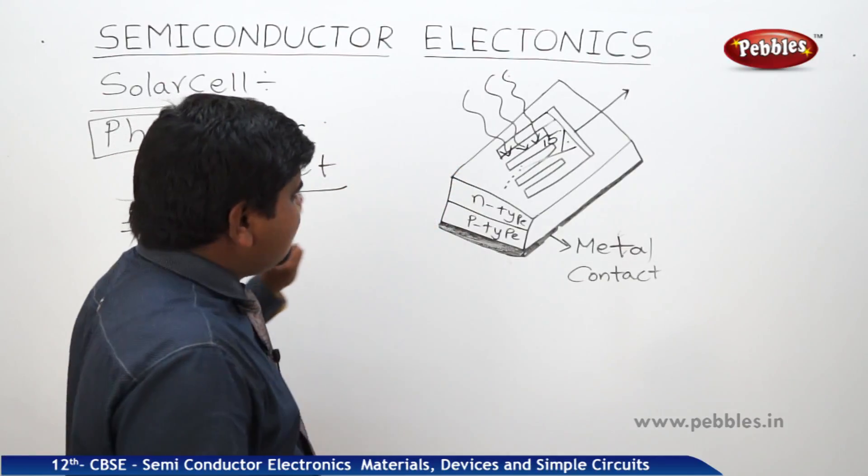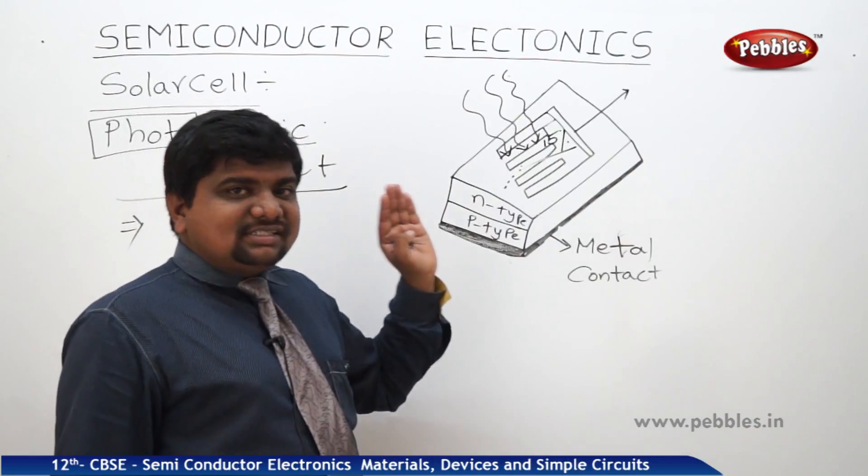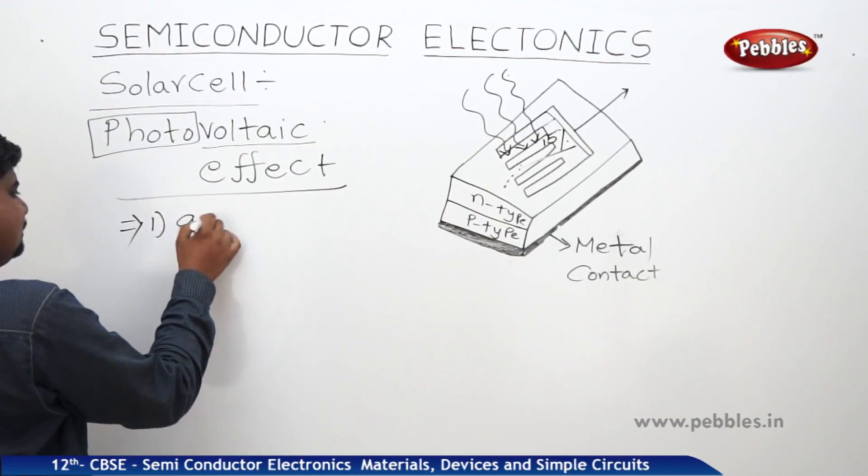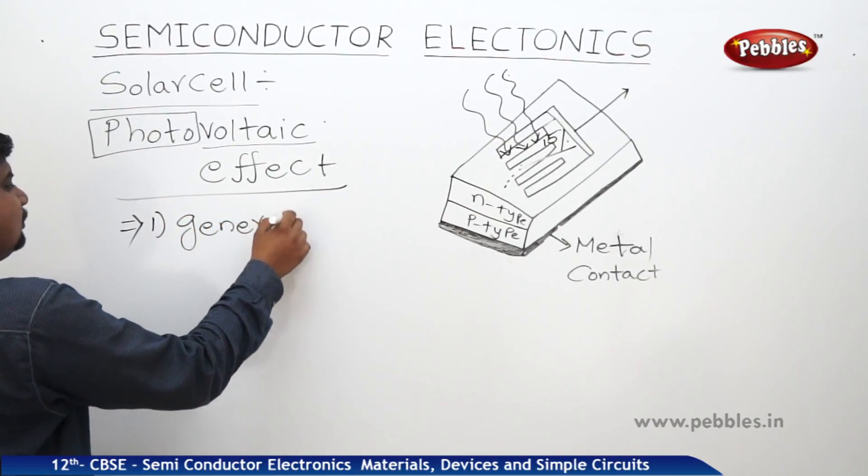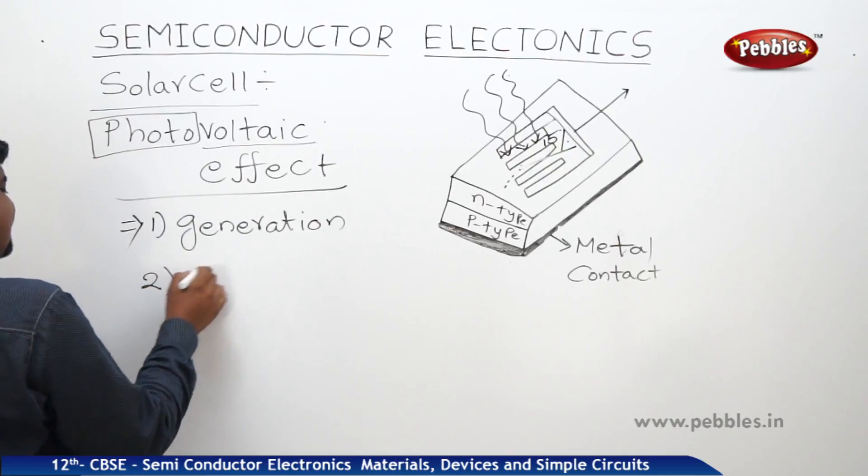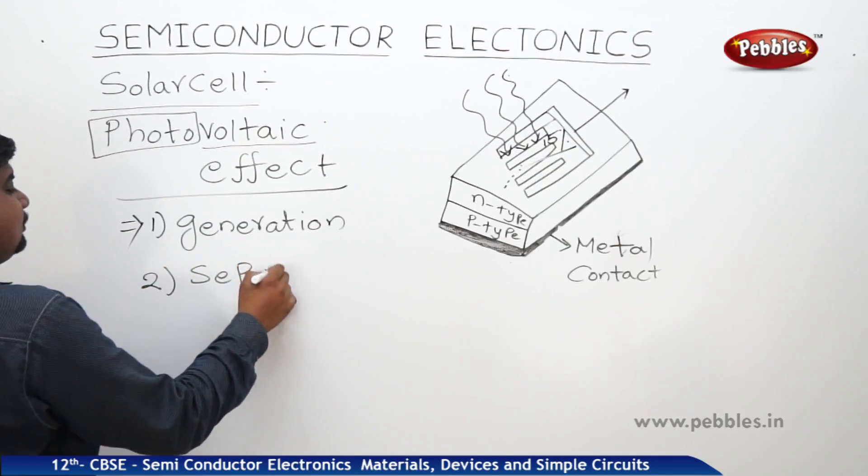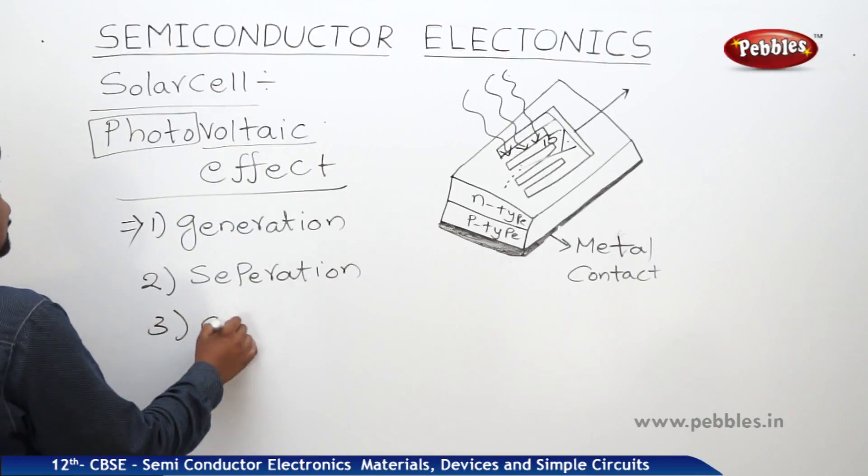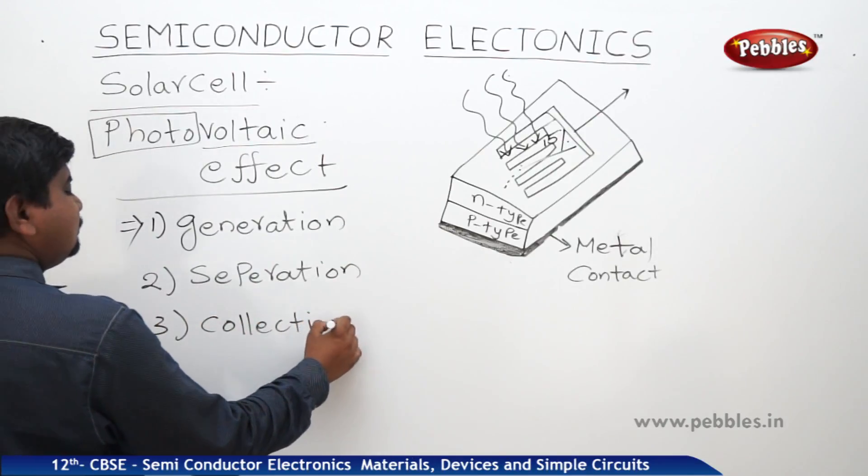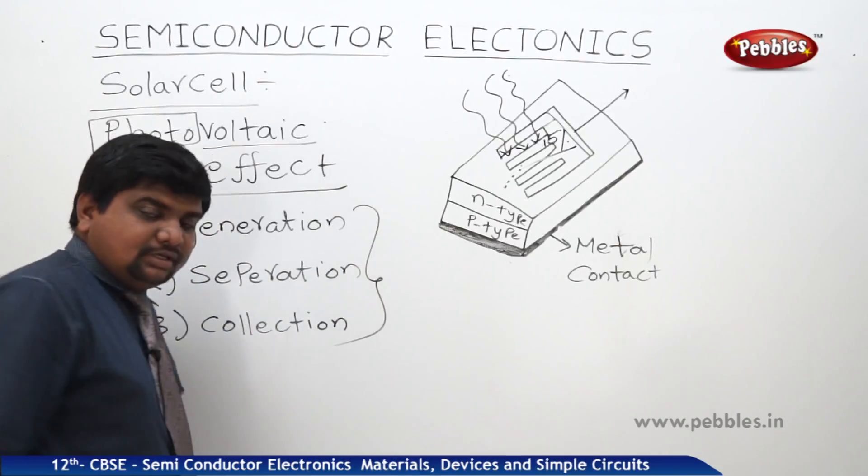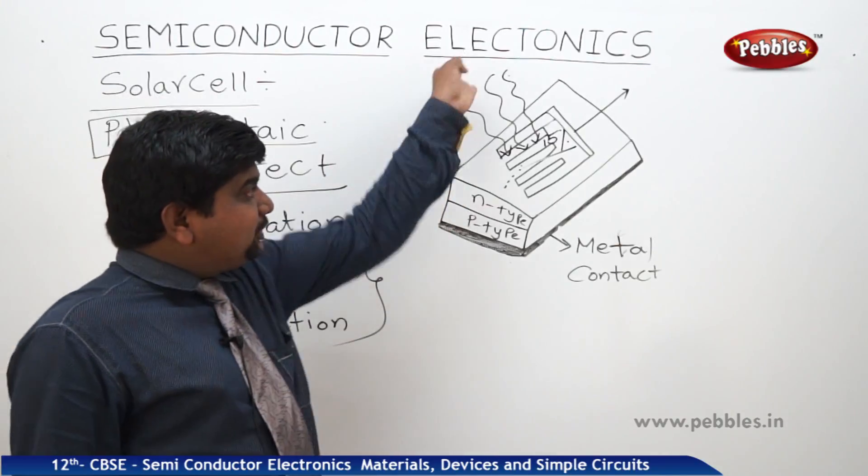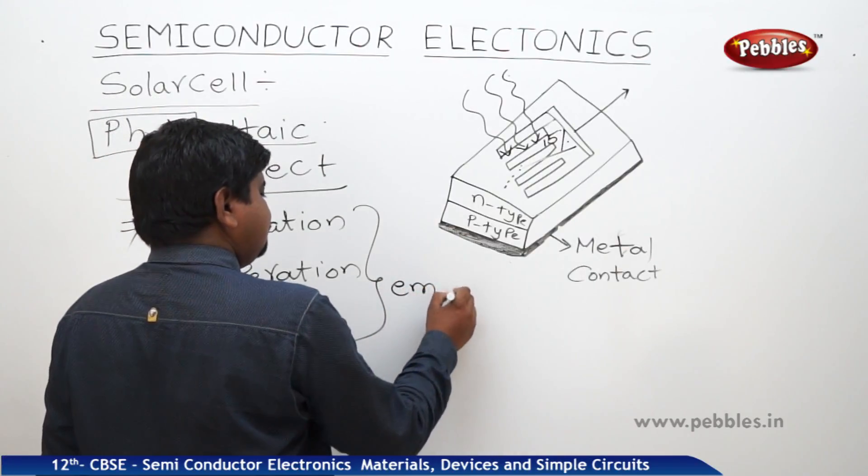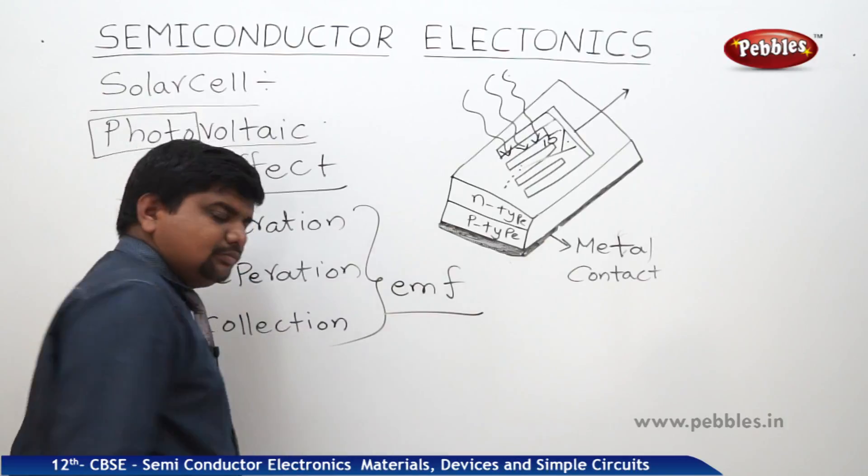What are those three different steps? The three steps are first generation, second is separation, third is collection. Through these steps, an EMF will be produced due to the exposure of photosensitive light.